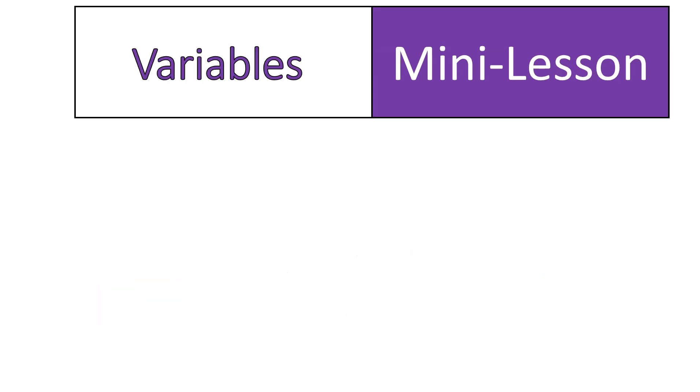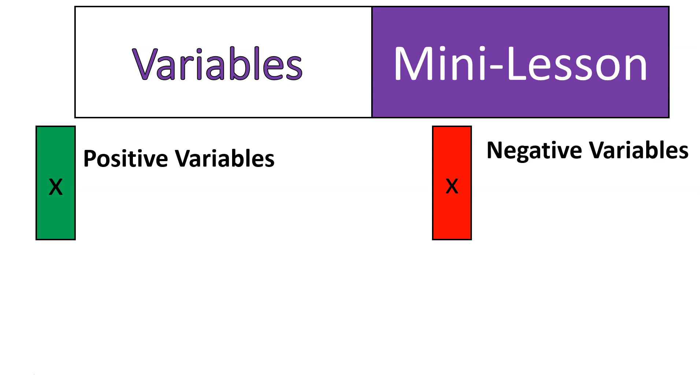Let's look at an example where we look at numbers and letters together. For this, what we're going to do is introduce the variable tile. The variable tile is a little bit larger. I'm going to use the same colors, green for positive, red for negative. And I'm going to label them with an x. Oftentimes, the algebra tiles will be labeled that way, but they can be used for any variable. And I'll show an example of that later.